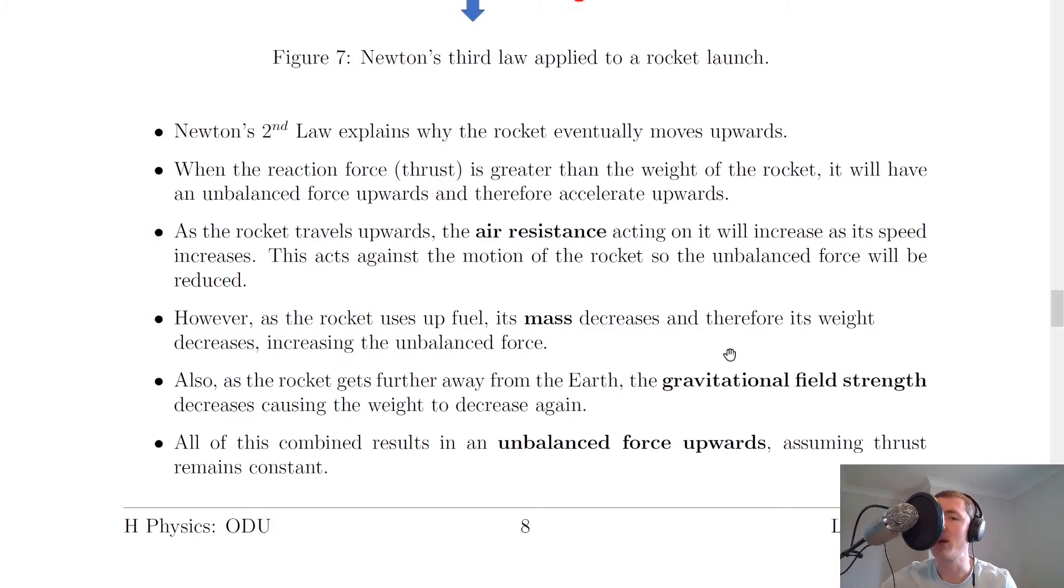And so if mass decreases, then weight downwards decreases. So this must increase the unbalanced force upwards because the thrust force upwards stays the same, but the force downwards decreases. So that's a good thing because it's contributing to a bigger unbalanced force upwards.